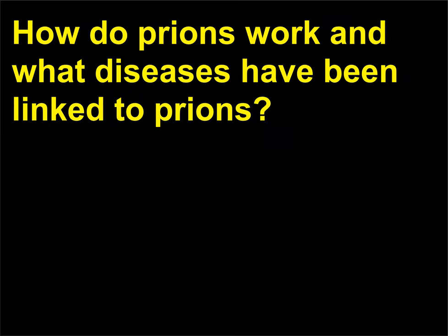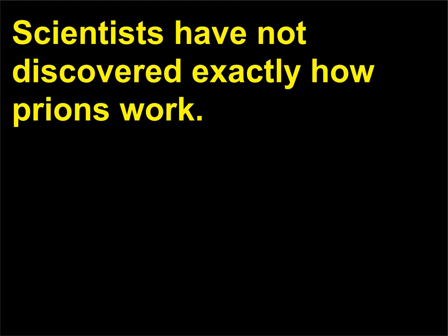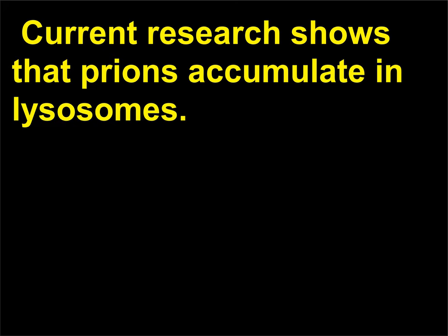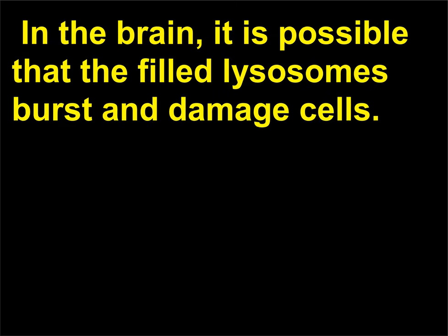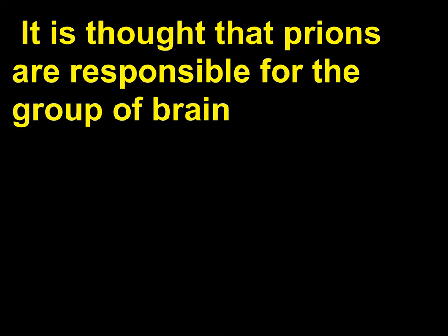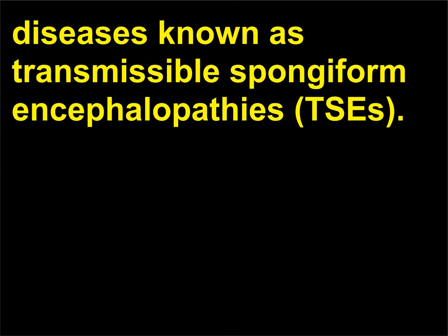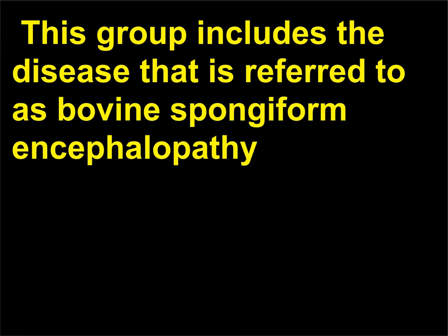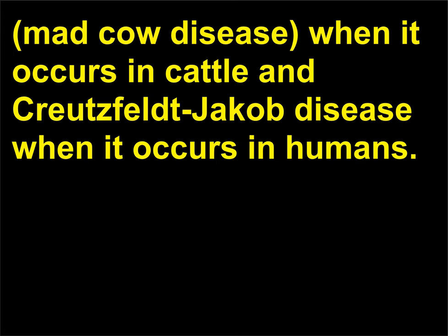How do prions work and what diseases have been linked to prions? Scientists have not discovered exactly how prions work. Current research shows that prions accumulate in lysosomes in the brain; it is possible that the filled lysosomes burst and damage cells. As diseased cells die, the prions contained in the cells are released and are able to attack other cells. It is thought that prions are responsible for the group of brain diseases known as transmissible spongiform encephalopathies (TSEs). This group includes bovine spongiform encephalopathy — mad cow disease when it occurs in cattle — and Creutzfeldt-Jakob disease when it occurs in humans.